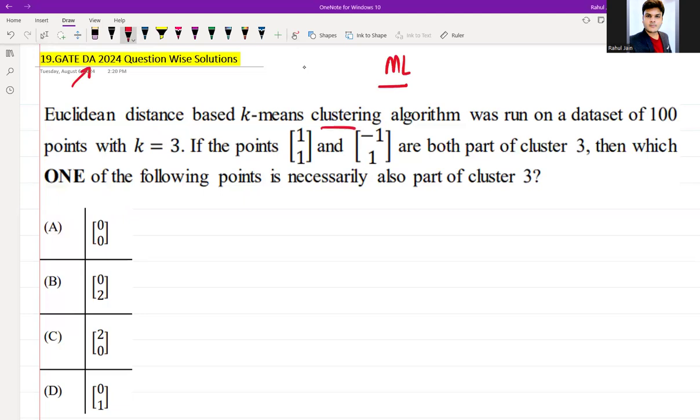The question was: Euclidean distance-based k-means clustering algorithm was run on a dataset of 100 points with k equal to 3. If the points (1,1) and (-1,1) are both part of cluster 3, then which one of the following points is necessarily also a part of cluster 3?